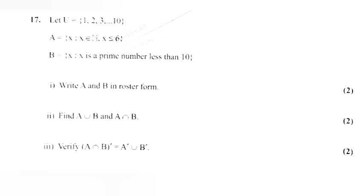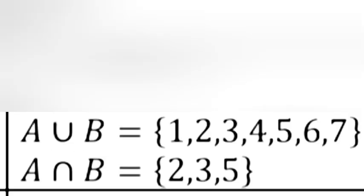Question 2: Find A union B and A intersection B. Answer: A union B equal {1, 2, 3, 4, 5, 6, 7}; A intersection B equal {2, 3, 5}.